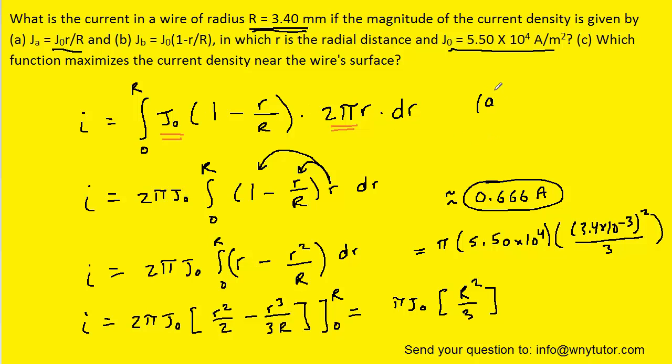Now to answer part C, we simply have to recall that in part A we obtained a current of 1.33 amps, which of course is larger than the current derived in part B. So the function that maximizes the current density near the wire's surface will be the current density function given in part A. So that would indeed be the correct answer to C.